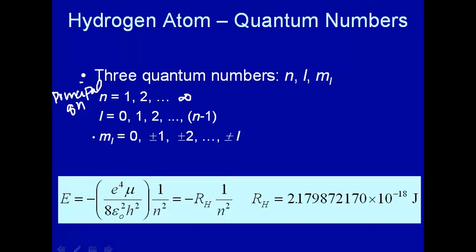And then given that value of l, there are some restrictions on values of m sub l. m sub l can go from zero plus or minus one plus minus two. So this is similar to, or actually exactly identical to, the restriction on m sub l for a particle on a sphere. But now l, for a particle on a sphere, l could go to infinity. Now in the hydrogen atom, l can only go to a maximum of n minus one. Okay, and here's the energy again, and here is the Rydberg.